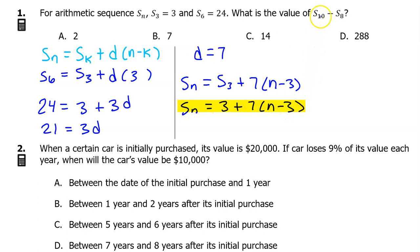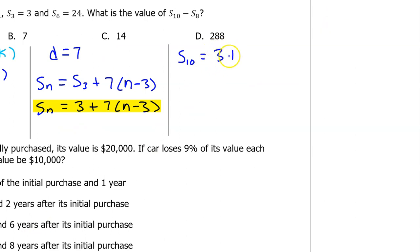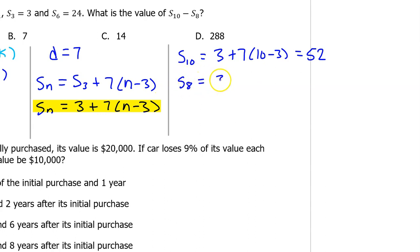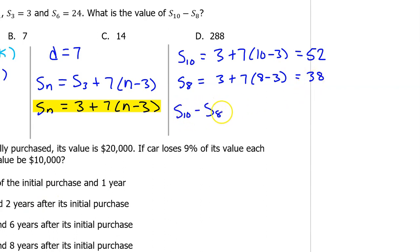We can use this equation to find S10 minus S8. S10 will equal 3 plus 7 times 10 minus 3, which turns out to be 52. This problem is calculator active, so use the calculator as needed. S8 will be 3 plus 7 times 8 minus 3, which is 38. So S10 minus S8 will be 52 minus 38, which is 14. The answer is C.